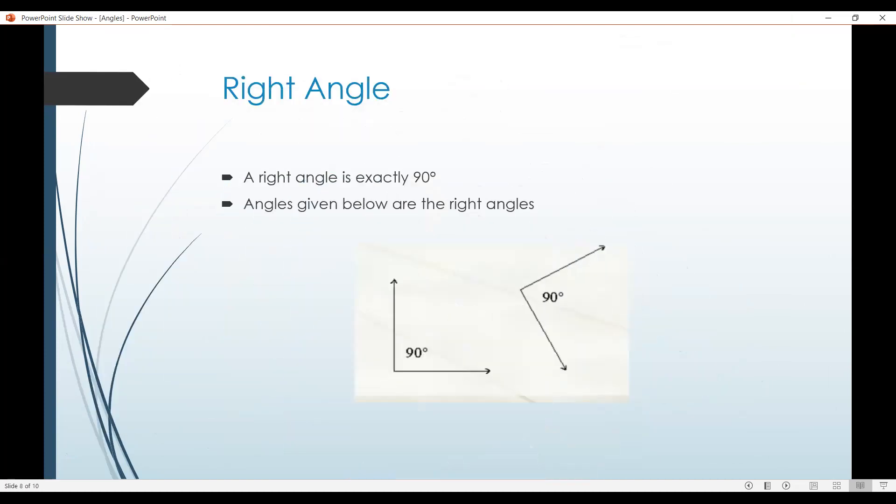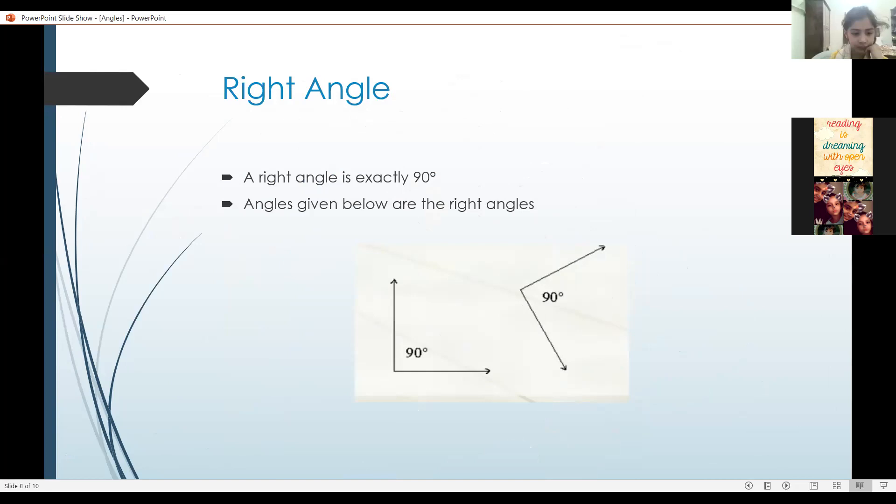Right angle. A right angle is exactly 90 degrees. Angles given below are right angles. Like this one is a right angle. This one is a right angle.